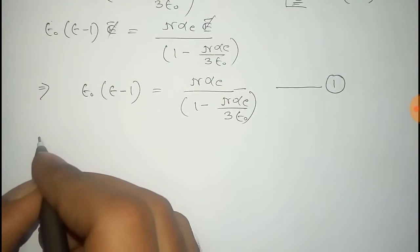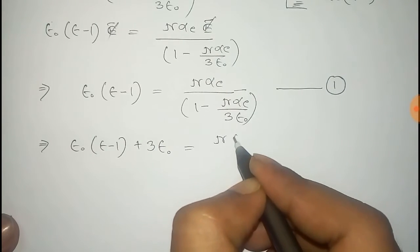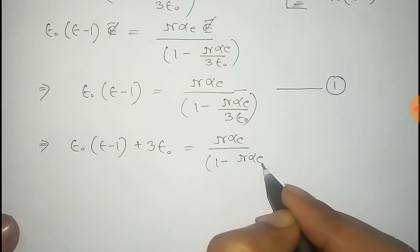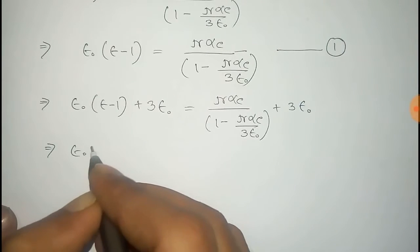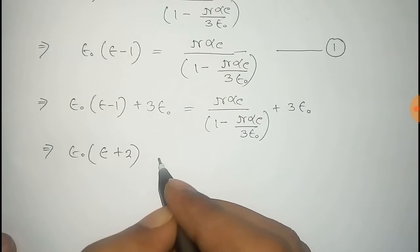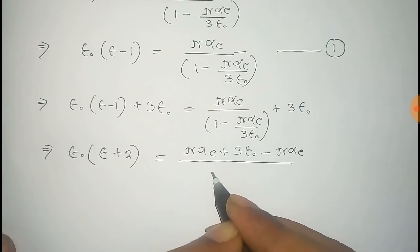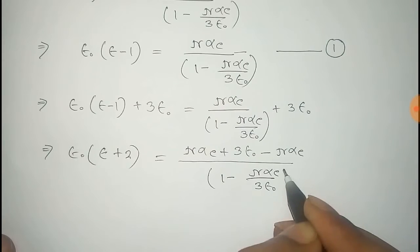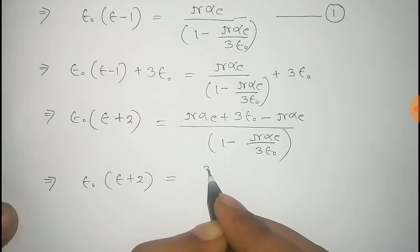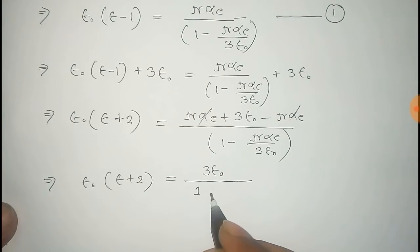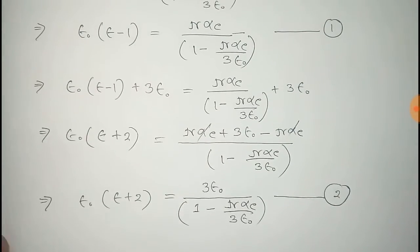We add 3·ε₀ to both sides of equation number one. After simplification, this gives ε₀·(ε + 2) equals 3·ε₀, because the term (1 minus n·α divided by 3·ε₀) cancels. We take this as equation number two.